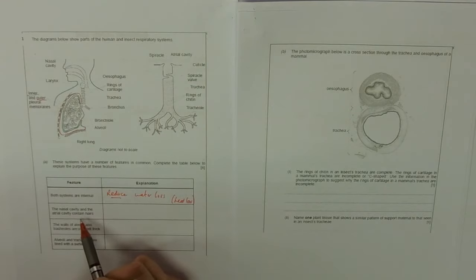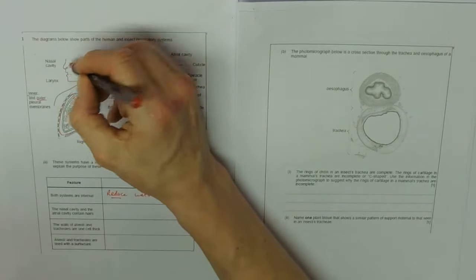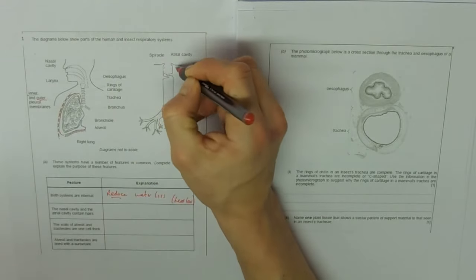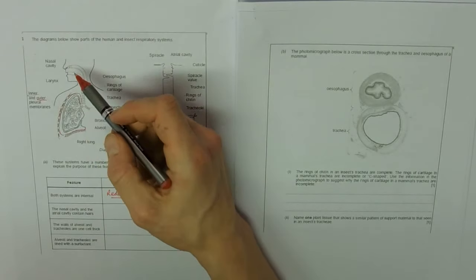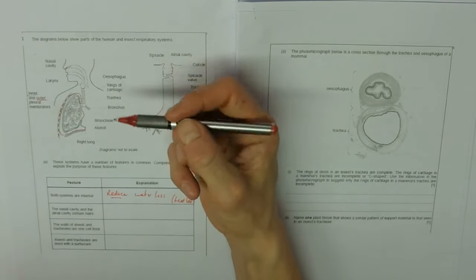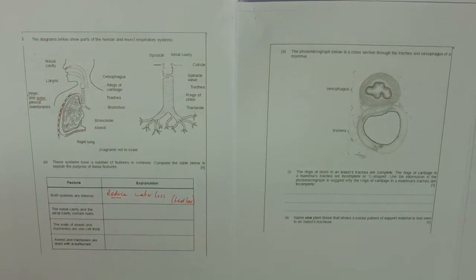Nasal cavity and the atrial cavity have hairs, so you've got hairs in your nose. They are to trap things, to filter the air or trap particles or dirt.